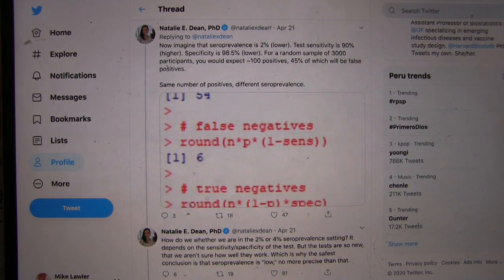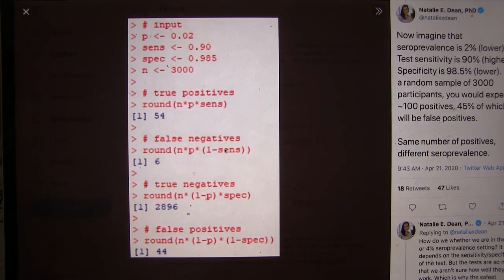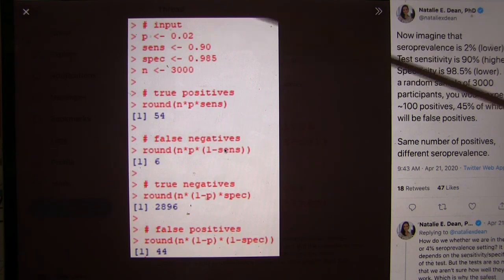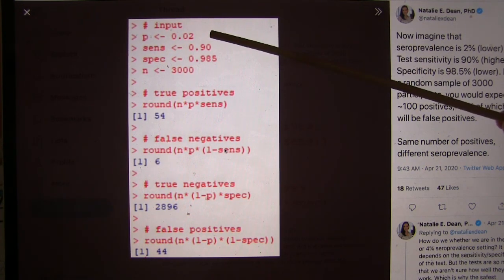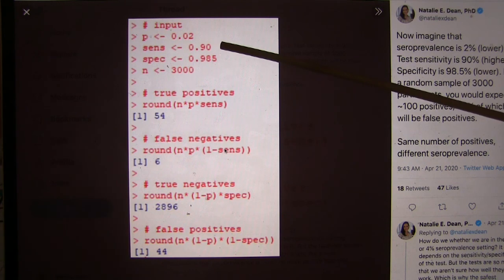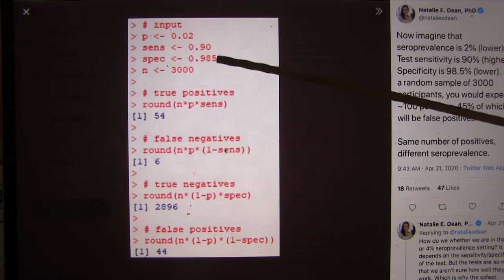Right there. So even though it looks like a small change, comparatively from 99.9 to 98.5, it's a large decrease. So let's go through the details here. So we have 2% of the people that actually have the disease. The sensitivity is 90%, specificity is 98.5, and again we have 3,000 people.